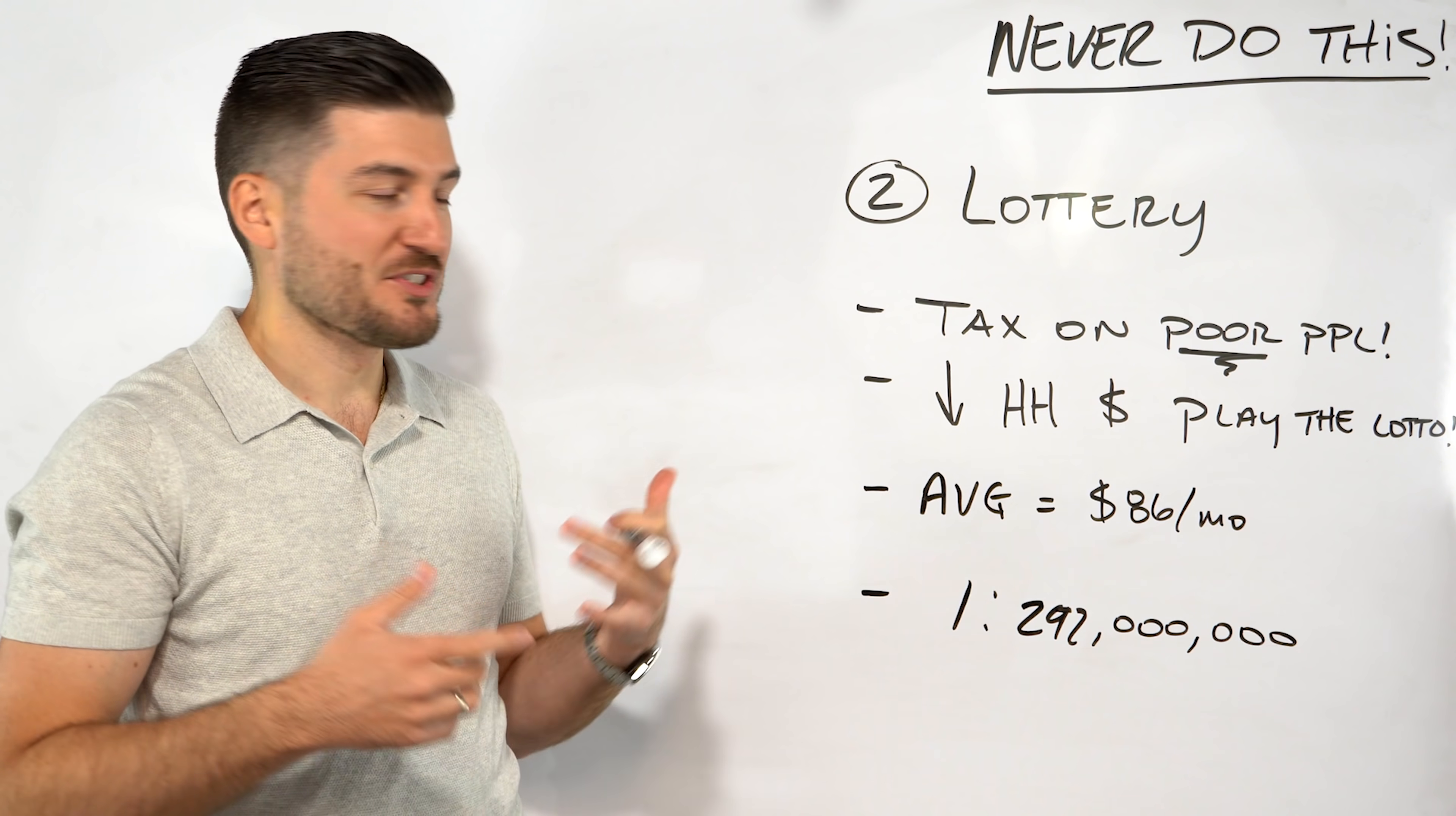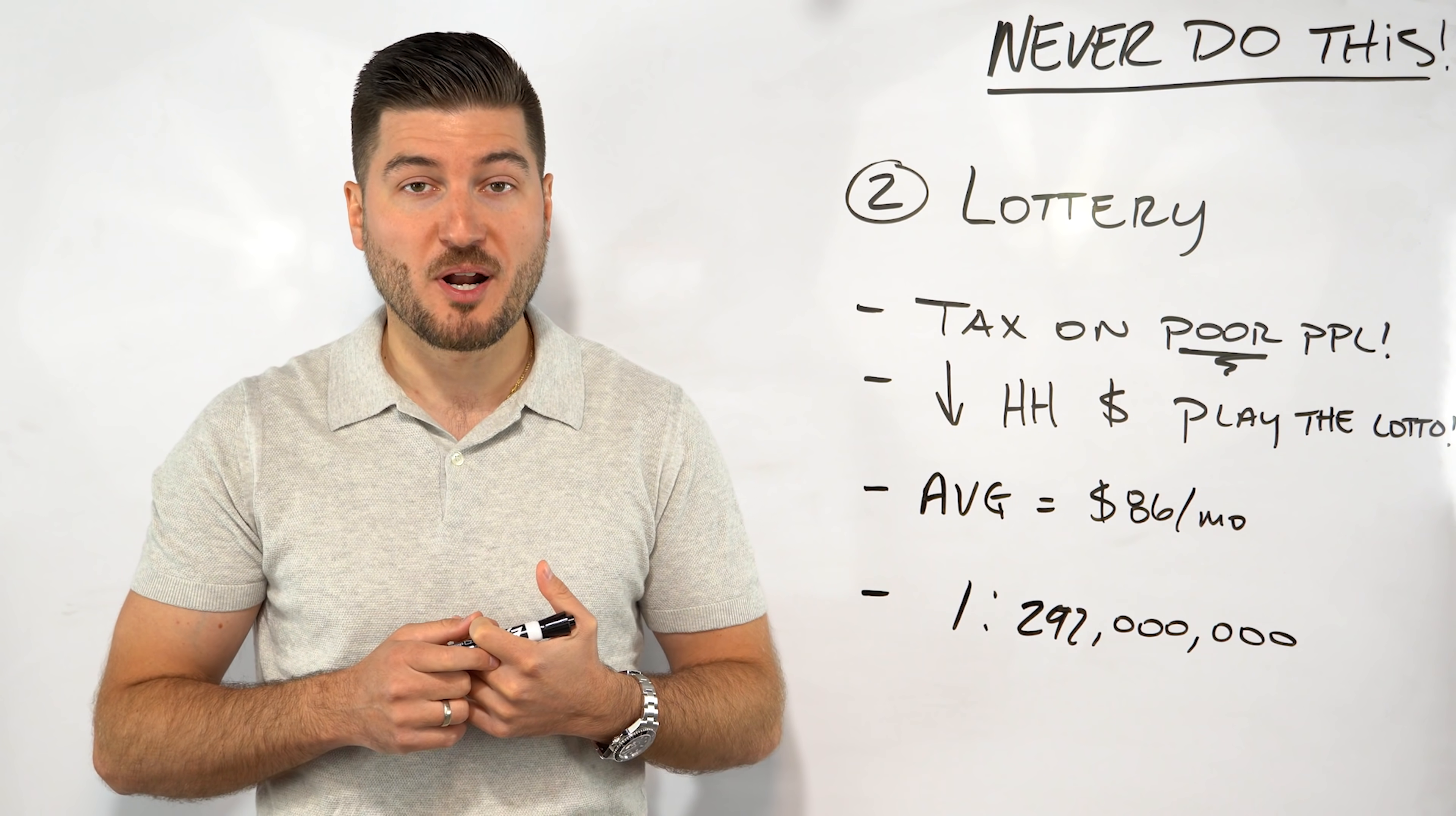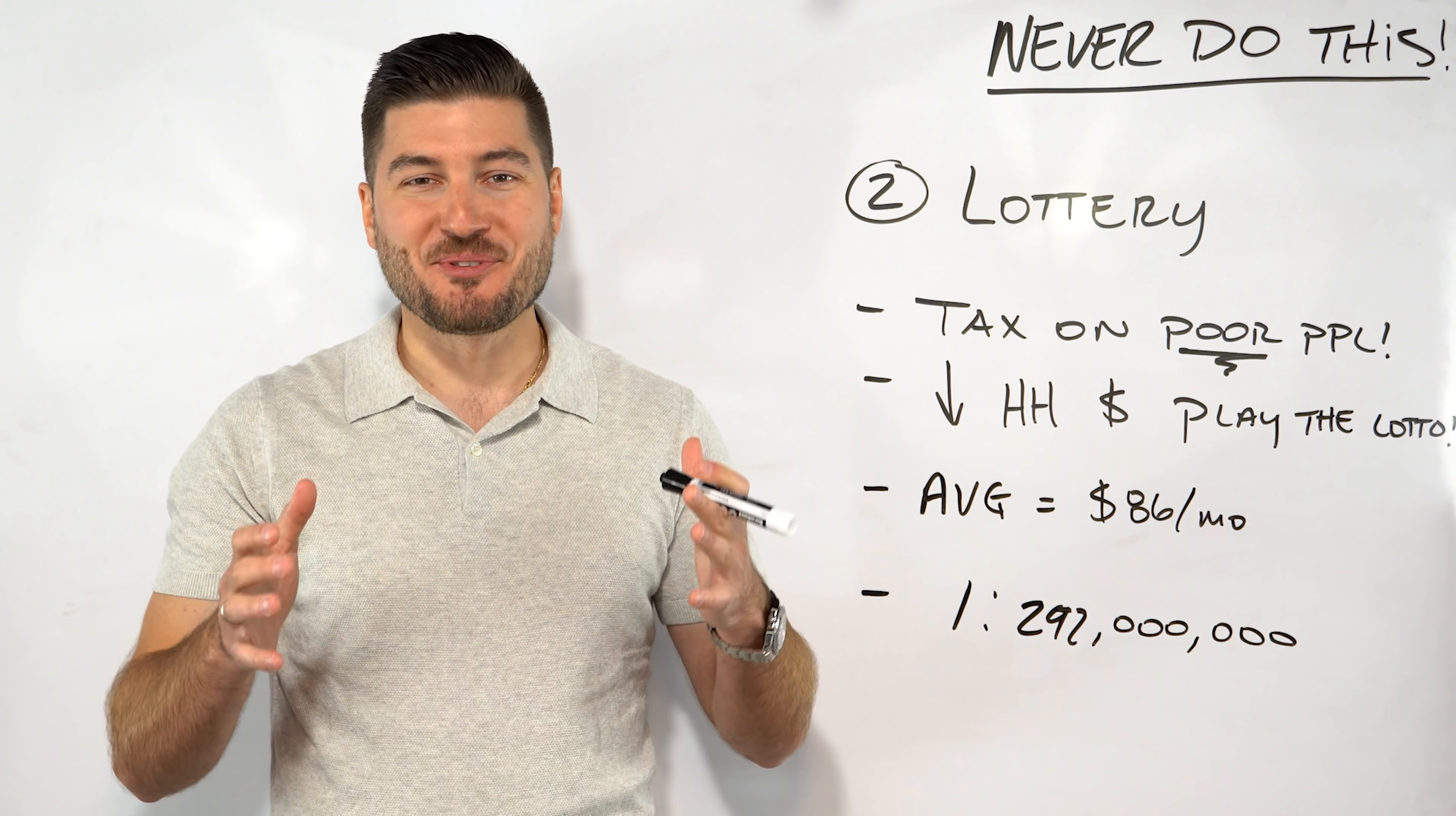Typically this money goes towards roads, schools, government initiatives. They have a very low chance of winning this significant sum of money. There's a CNBC article that states the average lottery player spends $86 a month on lottery tickets, which is around $1,000 a year. What would you do with $1,000 a year instead of buying lottery tickets? You can go on vacation, invest the difference, put it towards a down payment on a rental property, put it into a dividend portfolio. Just a fun fact, the current Powerball odds of winning are one in 292 million.